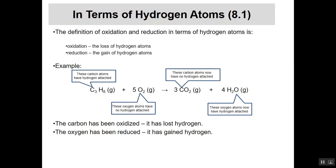If we look at the definition in terms of hydrogen atoms, it's the same idea we just saw with oxygen, except we replace it with hydrogen atoms and reverse the words loss and gain. Oxidation is the loss of hydrogen atoms, and reduction is the gain of hydrogen atoms. In the same example, the carbon atoms start with hydrogen attached and end up without it — so they've lost hydrogen and been oxidized. The oxygen starts with no hydrogens and ends up with hydrogen attached, so the oxygen has been reduced.